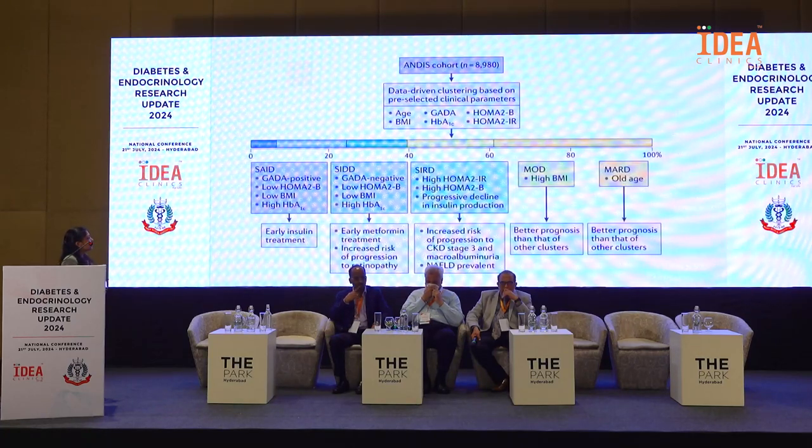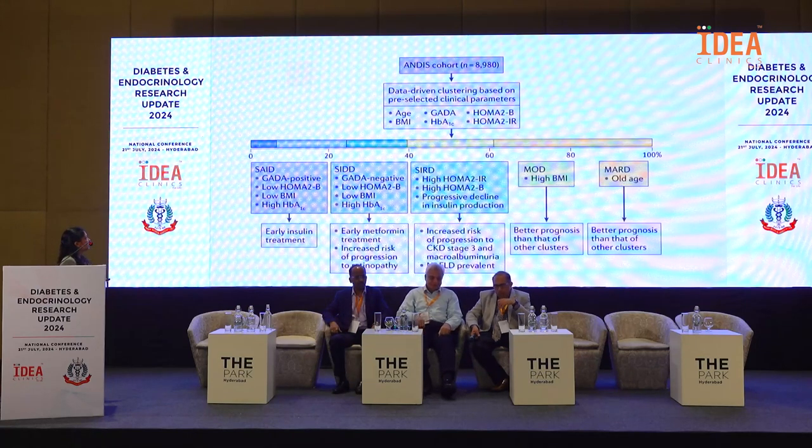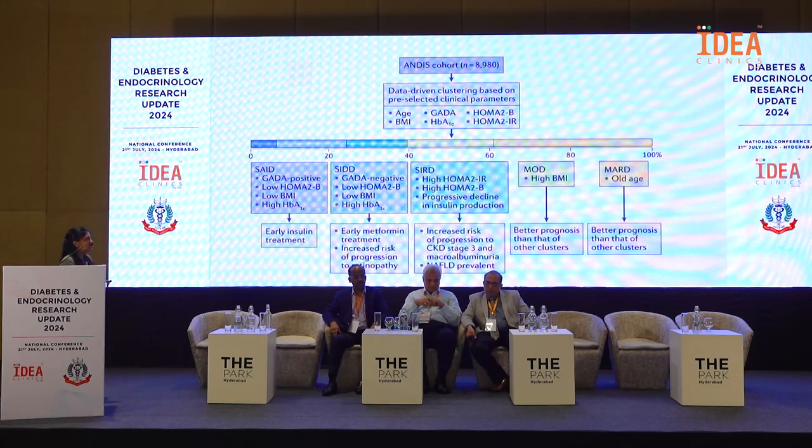This study came out in 2018. Based on six clinical parameters, five subgroups of diabetes were identified: severe autoimmune diabetes, severe insulin-deficient diabetes, severe insulin-resistance diabetes, mild obesity-related diabetes, and mild age-related diabetes. Those with severe insulin-resistance diabetes showed higher incidence of CKD and NAFLD, while mild obesity-related and mild age-related groups tended to have a better prognosis. These clusters behaved differently with distinct phenotypic characteristics and complication trajectories — are we moving towards a precision medicine approach in diabetes care?